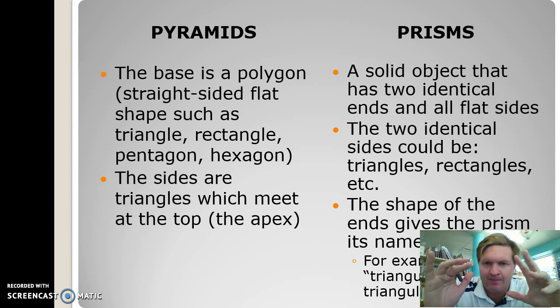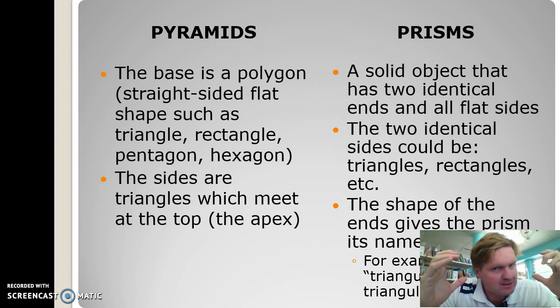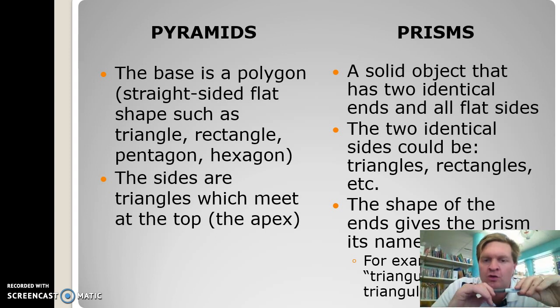Prisms are solid objects that have two identical ends and all flat sides. The two identical sides could be triangles, rectangles, and other shapes. I'll show you some examples later on.